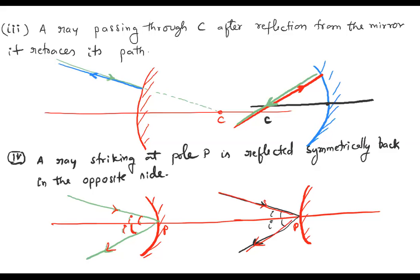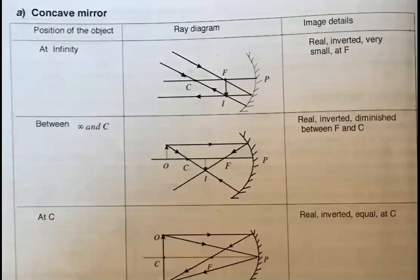These are the rules for image formation — the rays we use to form the image. Now we will see how the image is formed using diagrams. Drawing diagrams is difficult on the board or device, so pictures are being used. We will go for the concave mirror.